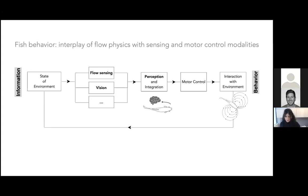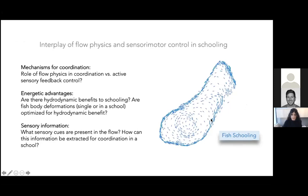It's not known how the fluid environment has shaped the evolution of the sensory-motor control in fish, or what sensory cues matter for swimming behavior specifically. These questions are difficult to address because they lie at the intersection of physics and neuroscience. In the example of schooling, there are many open questions: what's the role of hydrodynamics in coordination, how much is passive versus active due to sensory feedback, are there energetic advantages to schooling, and what are the relevant sensory cues?